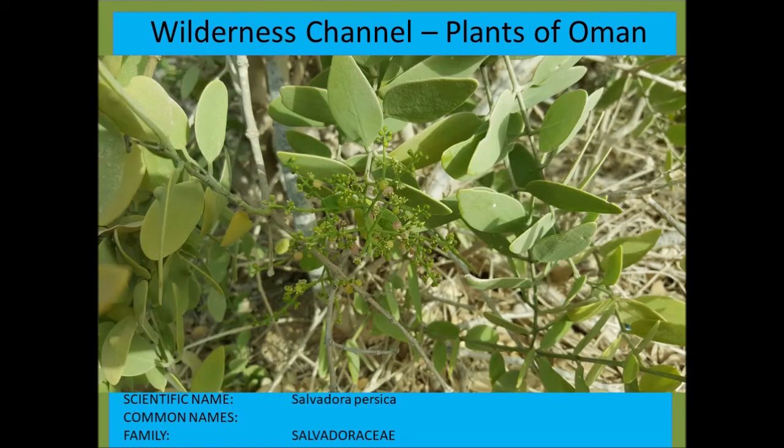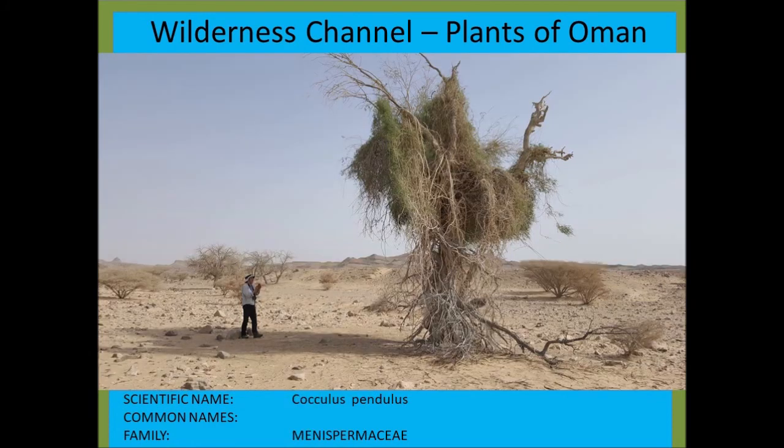Salvadora persica — a close-up of the toothbrush tree or bush. Cocculus pendulus — we saw a previous specimen on a rock face; this one is growing on a tree.